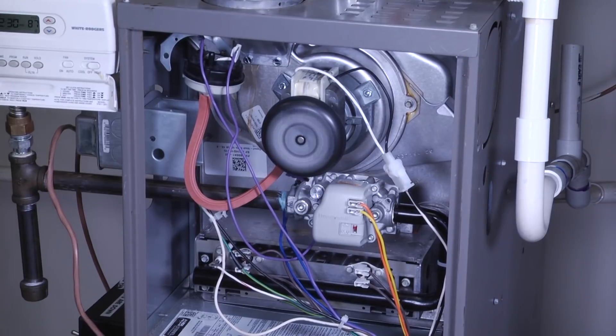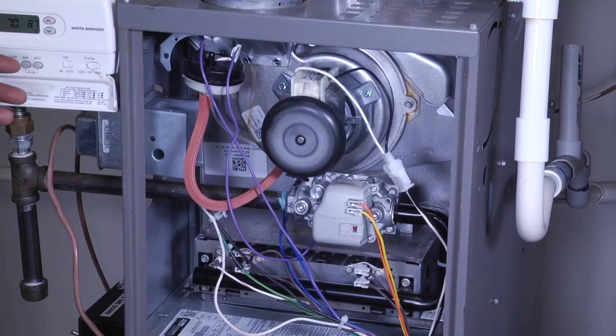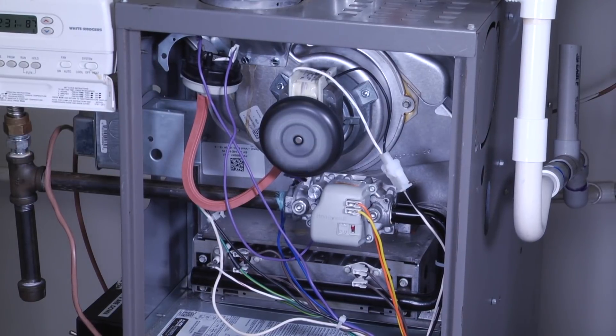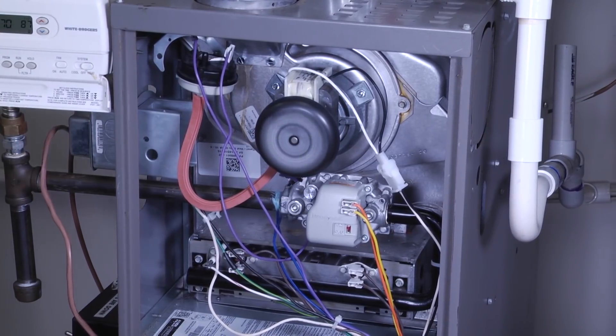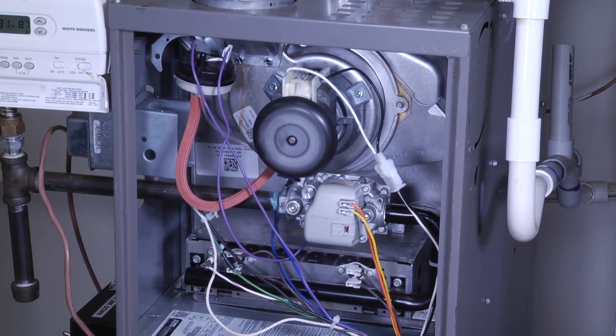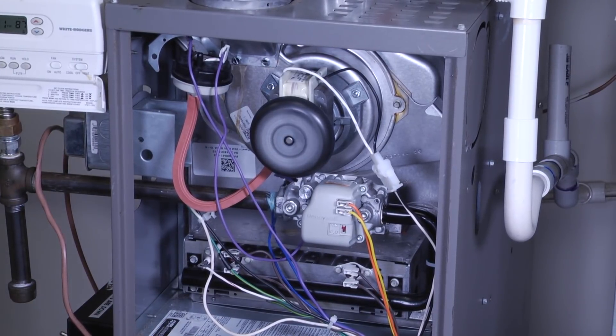And so that's the complete sequence of operation for a gas fire furnace. First the call for heat, our inducer motor, the pressure switch, our hot surface igniter glows, our gas valve opens, our flame sensor proves flame, our blower motor engages, and then we reach our set temperature.